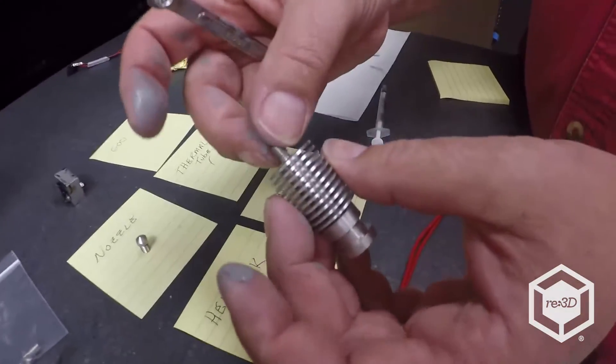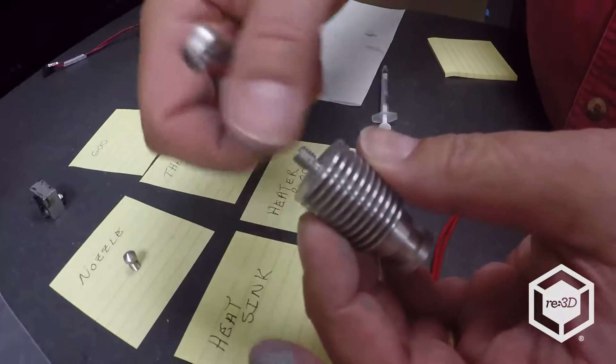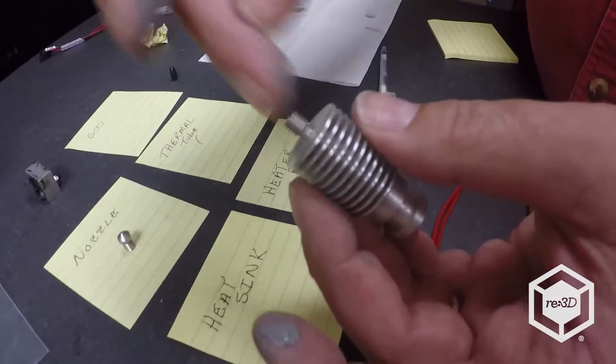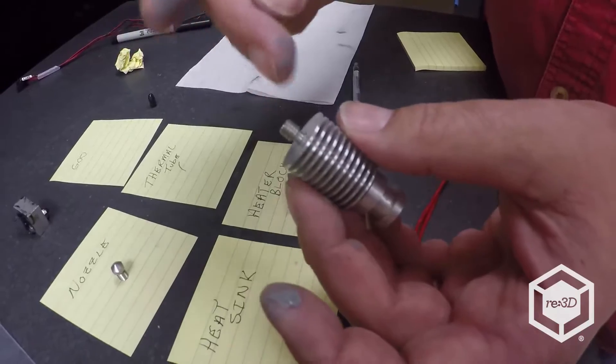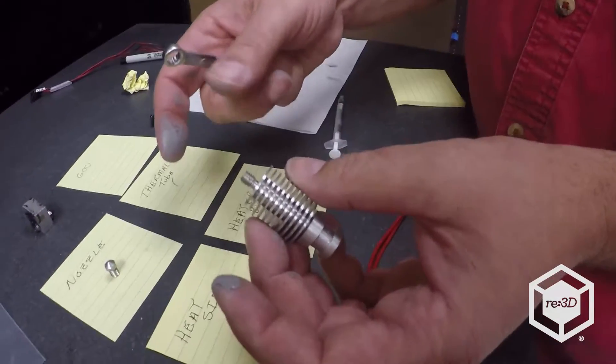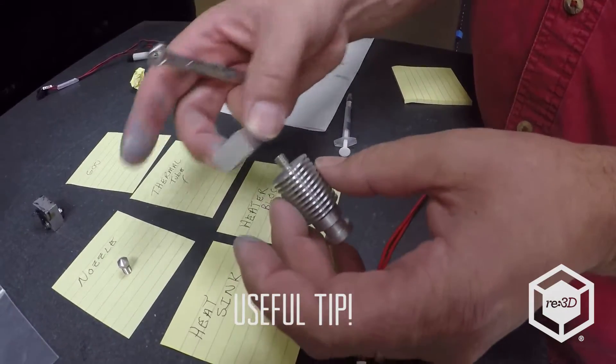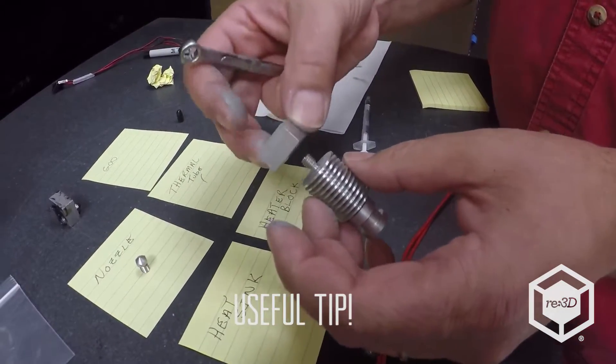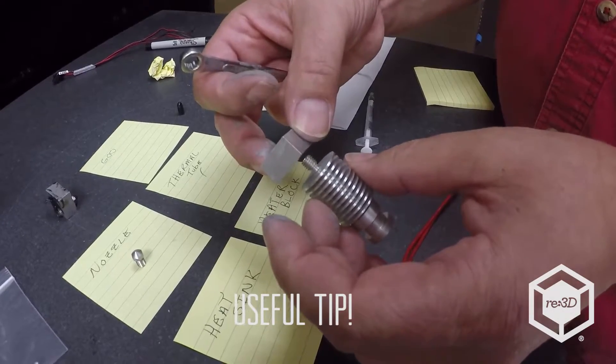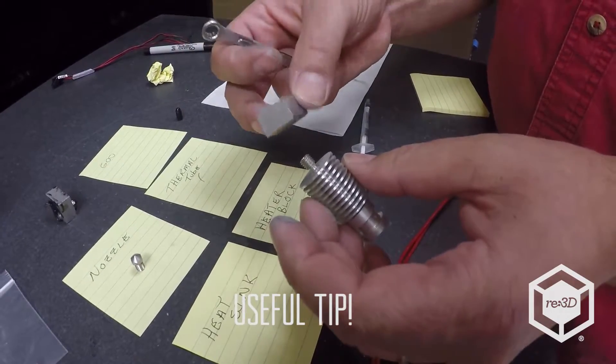One of the things that has proven difficult before is if you need to somehow replace this thermal tube. Because it's cinched in there pretty good. There's a trick you can use with the heater block and the nozzle. Holding the heater block and nozzle tight together and then try to break it loose that way.